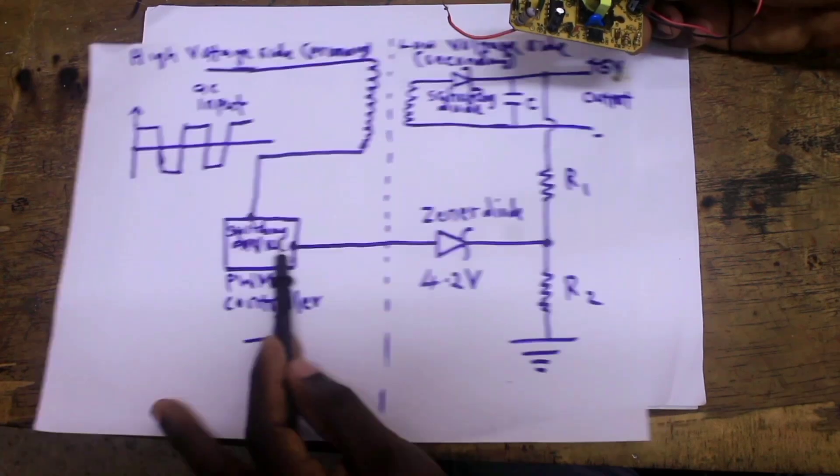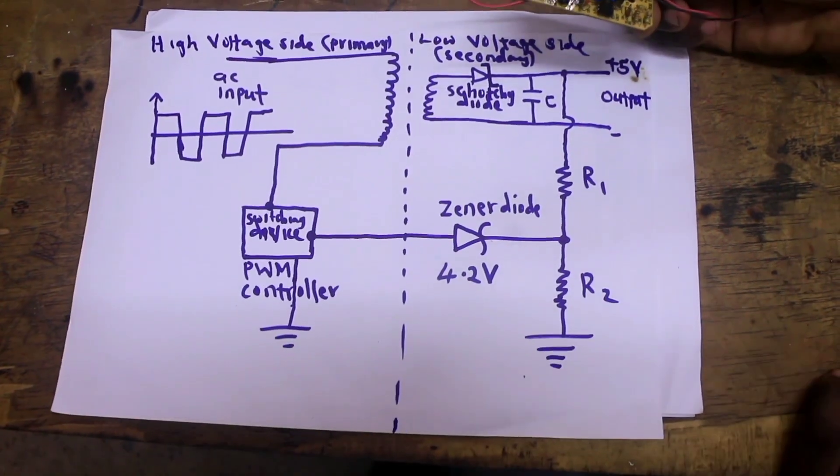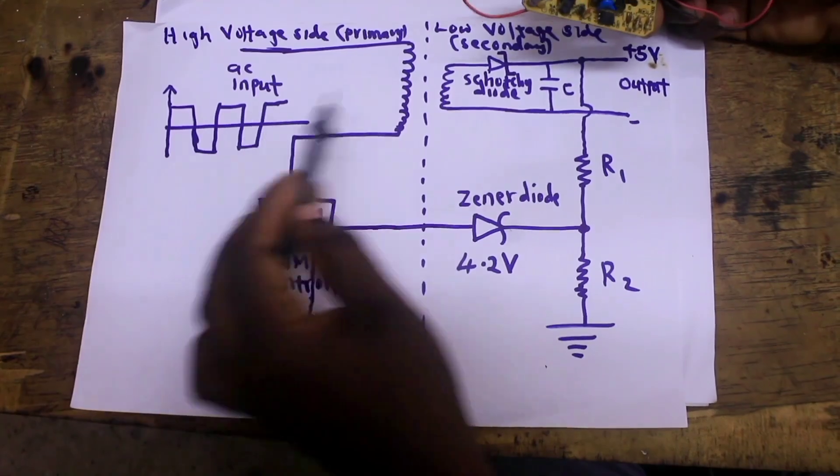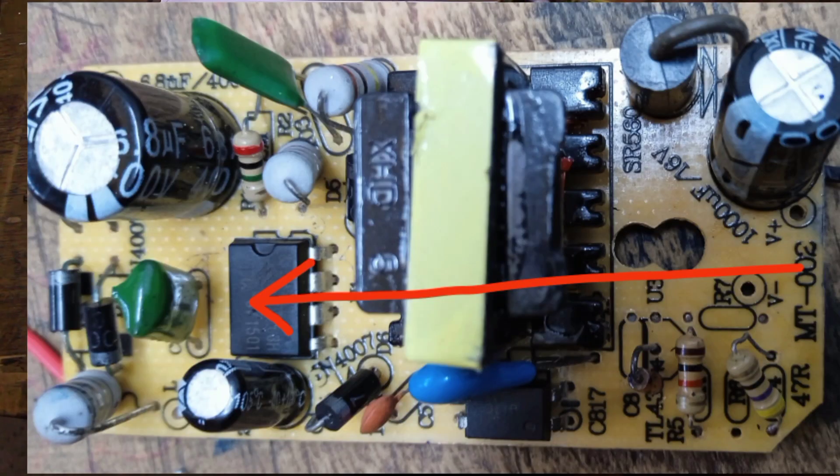This is the switching device which is PWM controller. You can see this is our square wave input to the transformer. This is the PWM controller here you can see it.